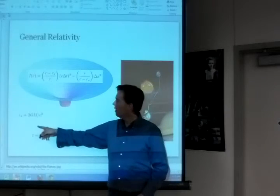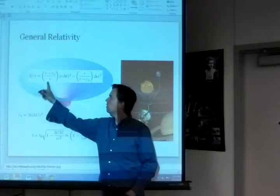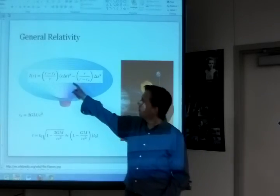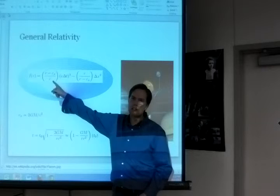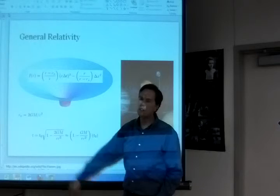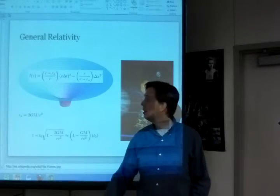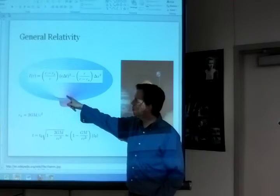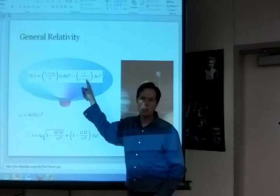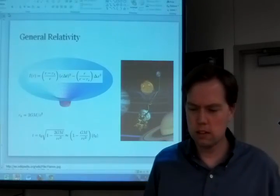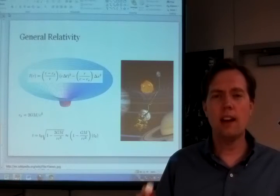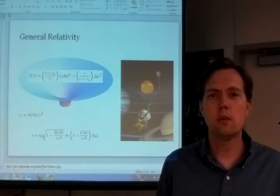One interesting note, this R sub s, this is the formula for it: 2GM over c squared. But the crazy thing about this is that this formula here can go to 0, right? If r, which is the distance from the source, if this r is equal to this value, this is going to go to 0, this whole formula blows up, I divide by 0. That's called the Schwarzschild radius, and that is the radius of a black hole.